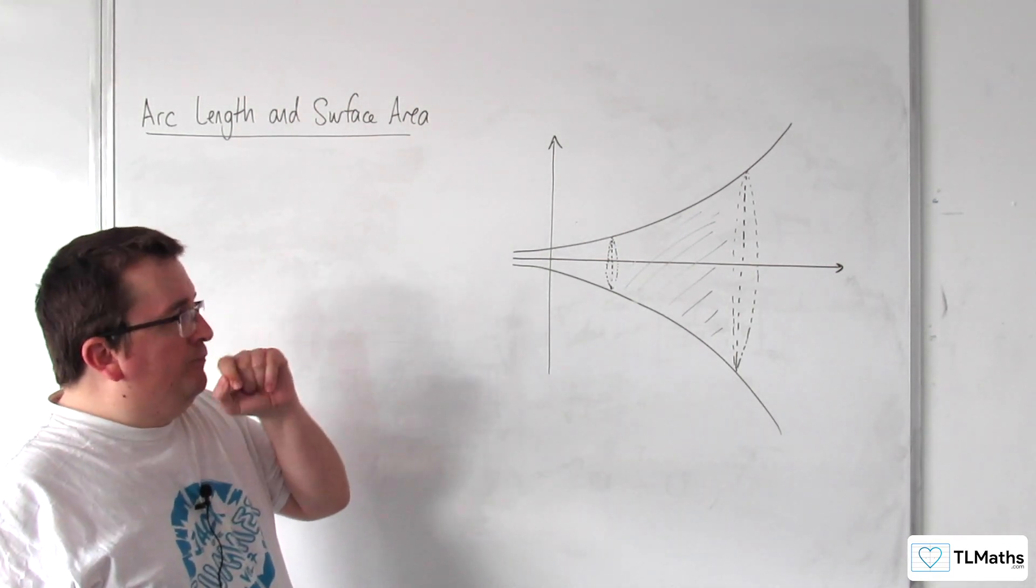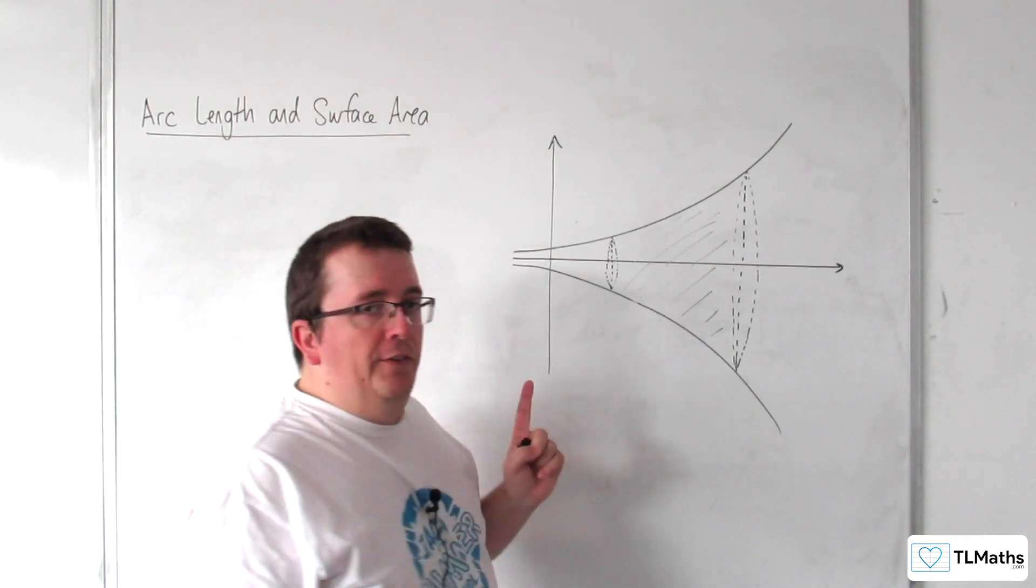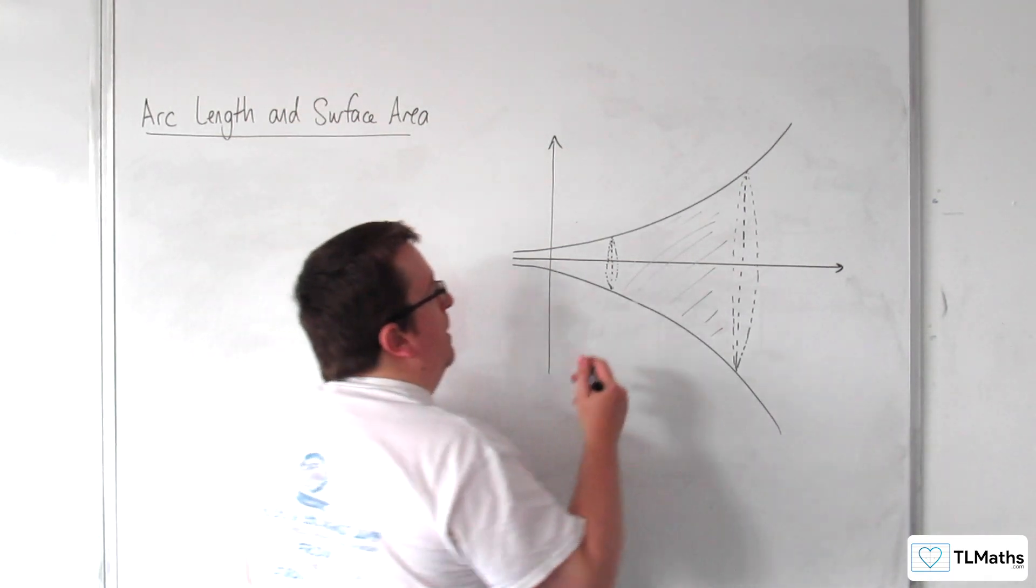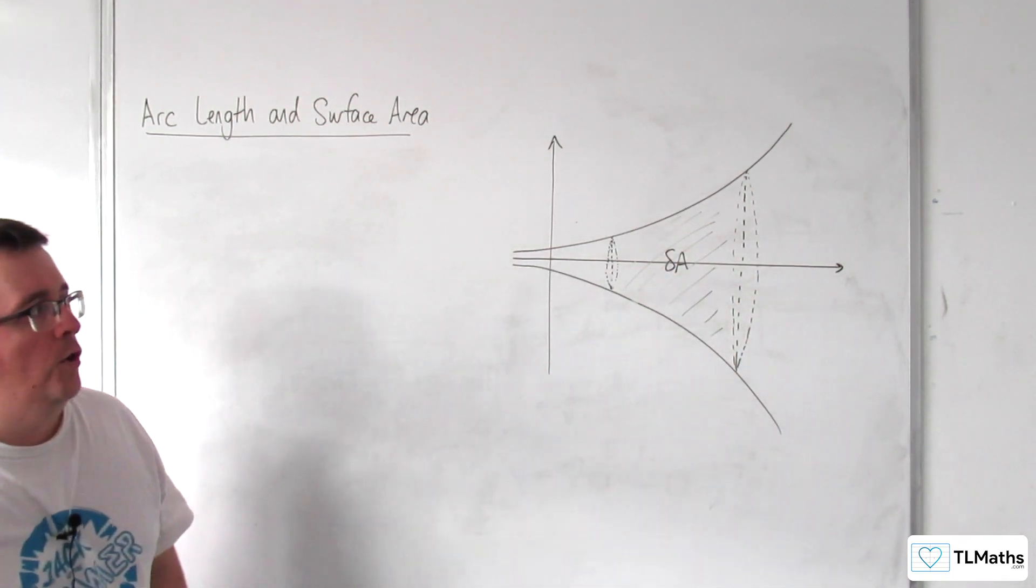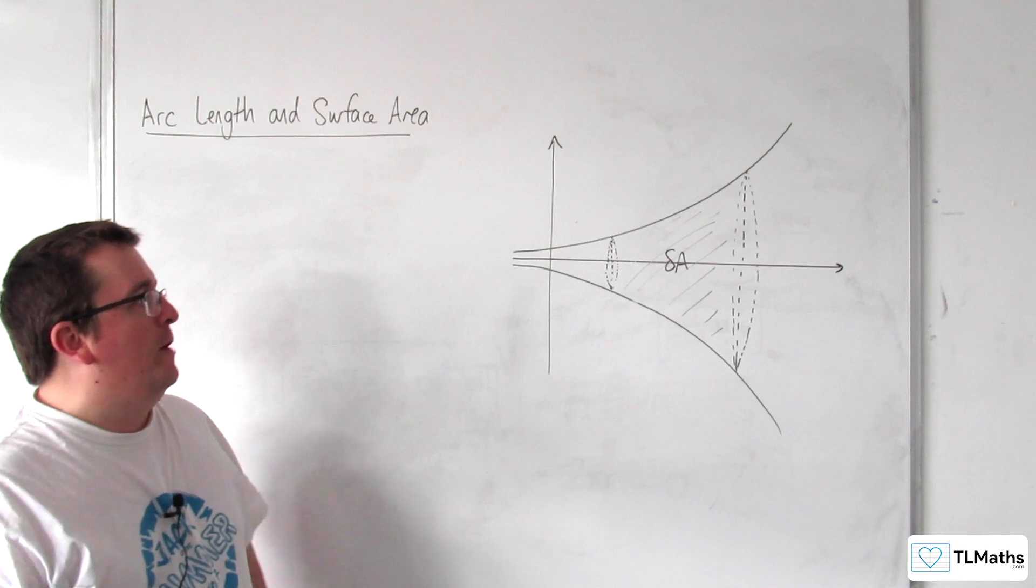What I'm going to do is I'm going to refer to that area at the moment as delta A. So a little bit of area at the moment going around.